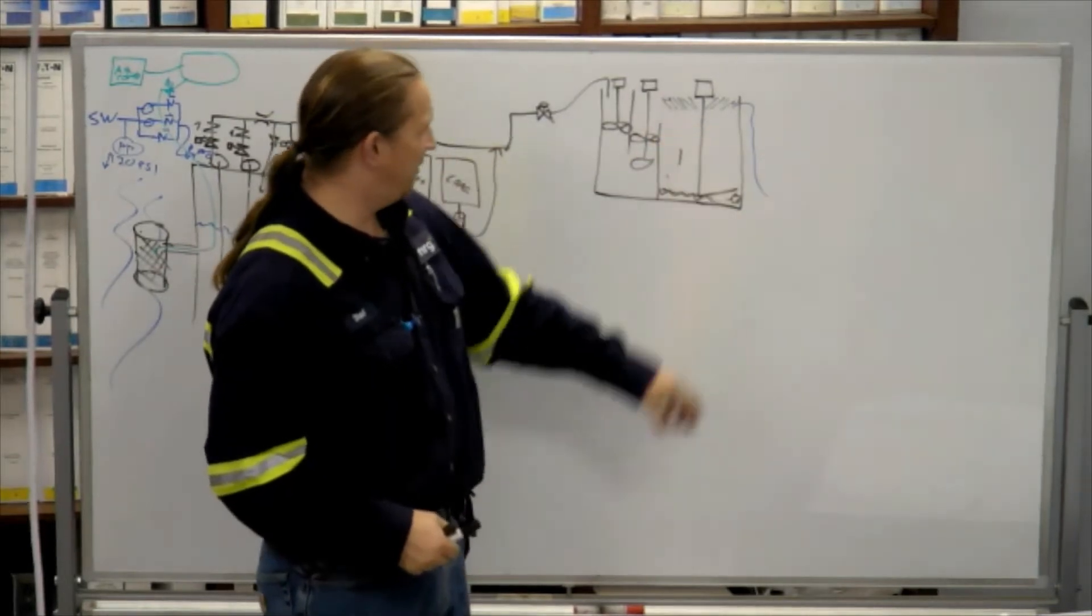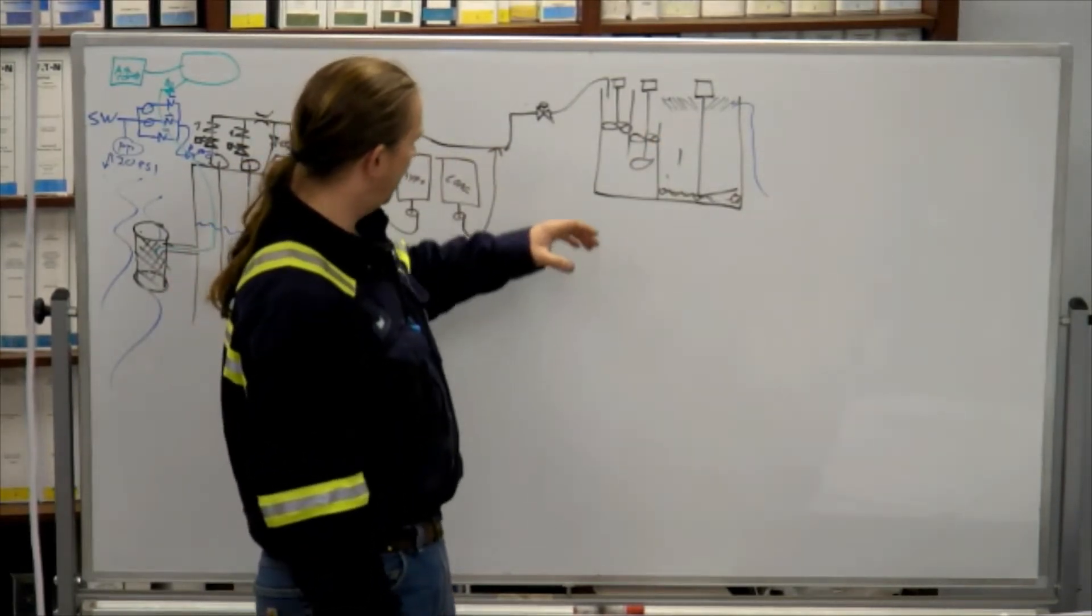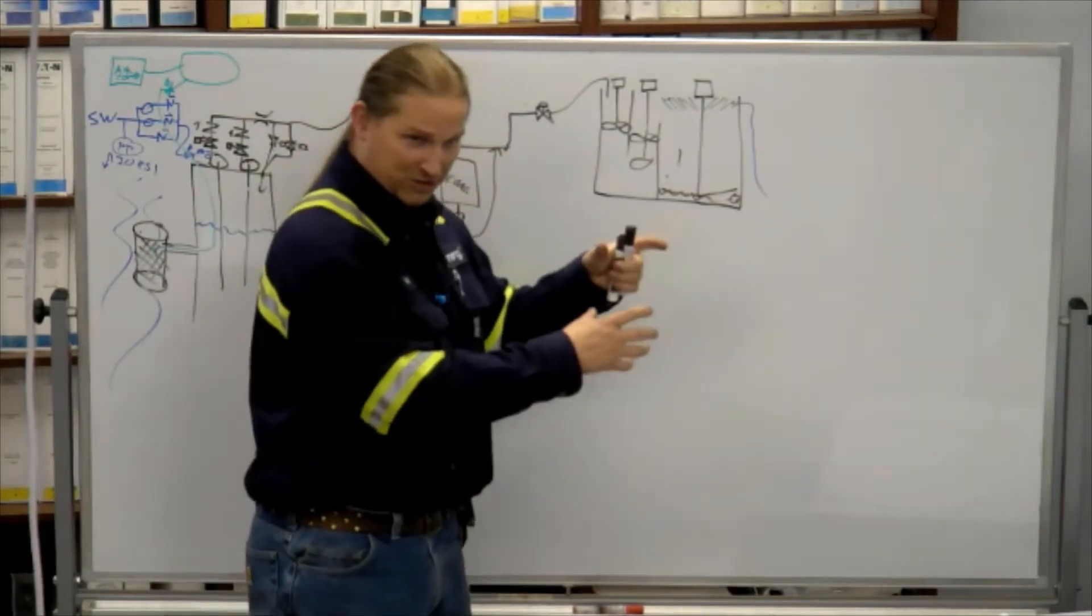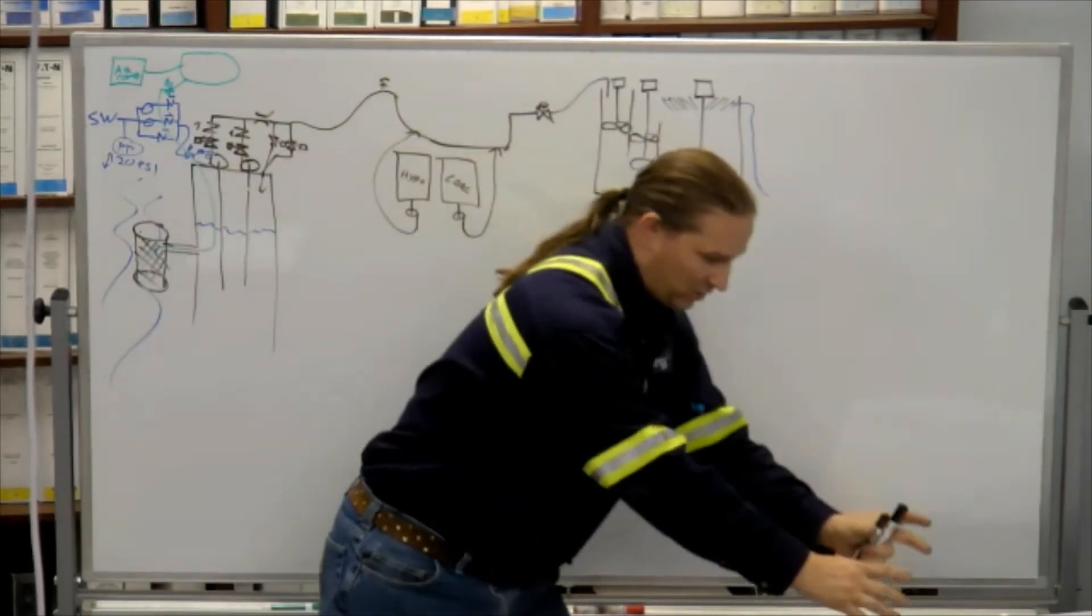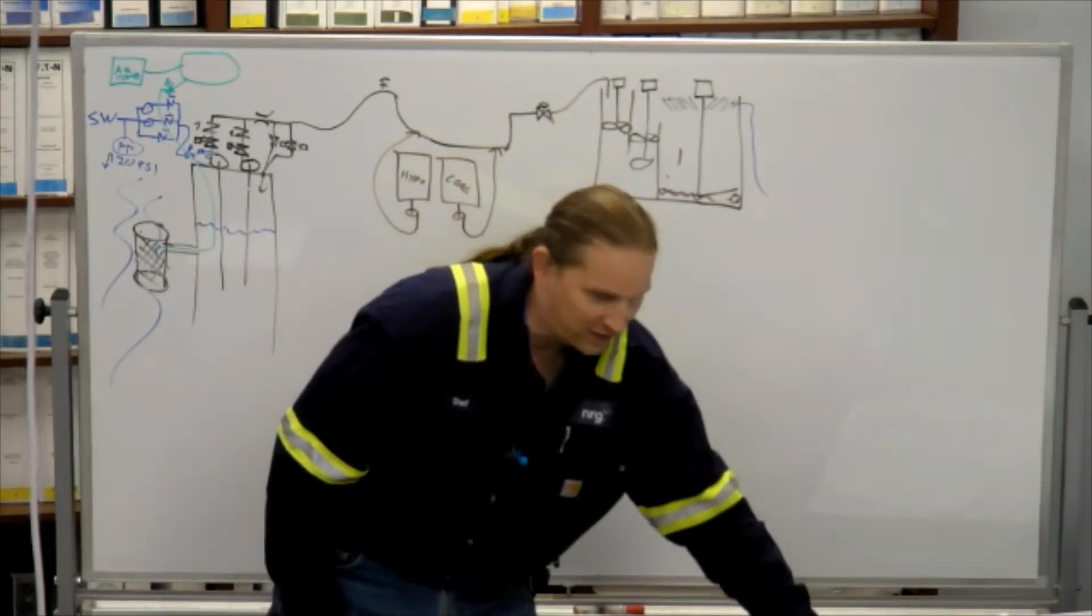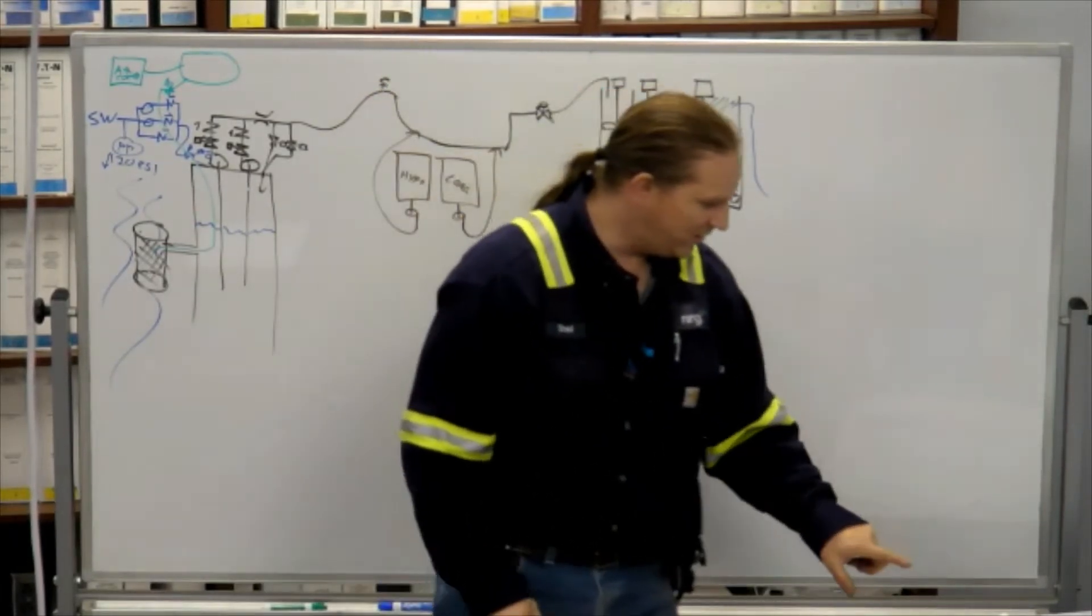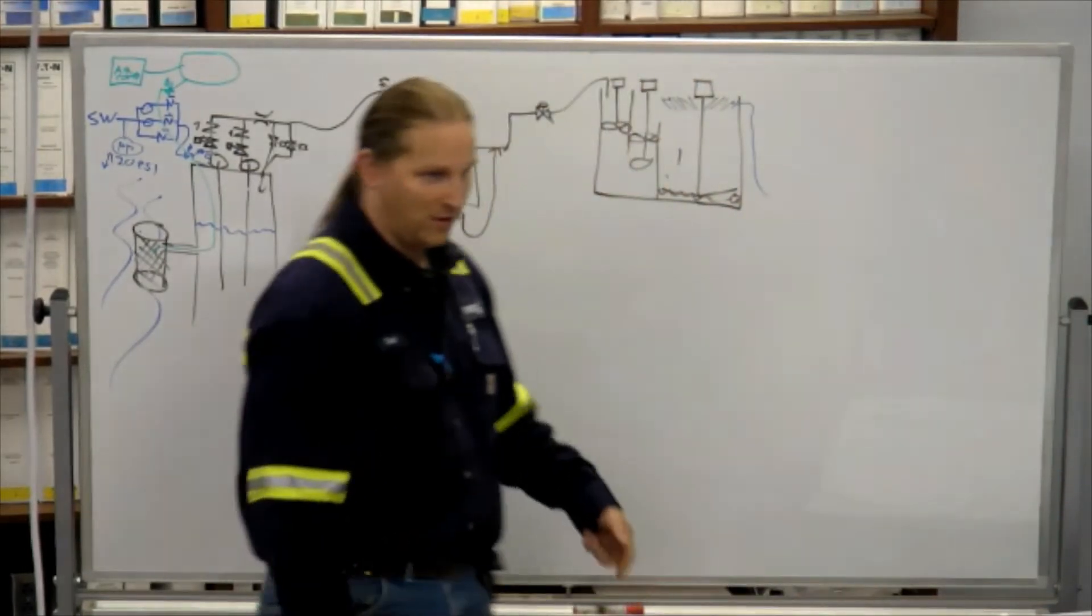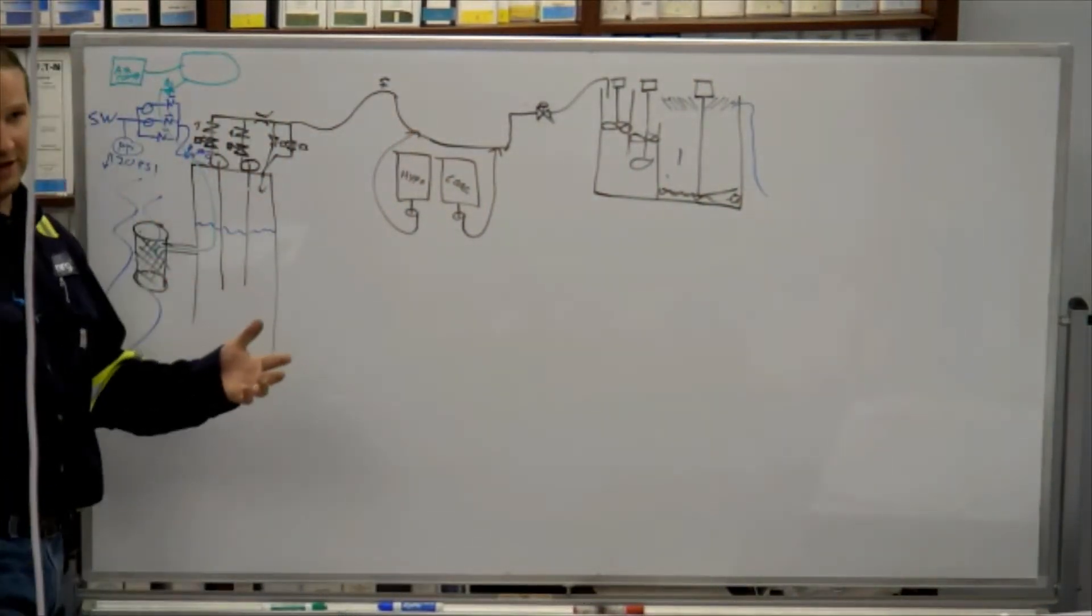So what this is doing is it's like you've got a mason jar, and you scoop up a bunch of Mississippi River water, and you just leave it on the table, and then gravity does its thing, and all this stuff settles at the bottom, and then you suck off the top where the water is clean. But it's doing it at 5,000 gallons a minute.